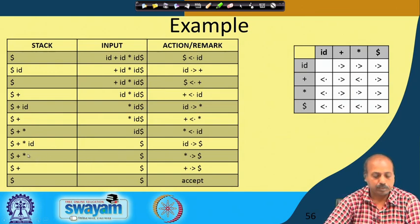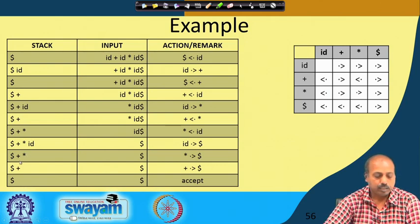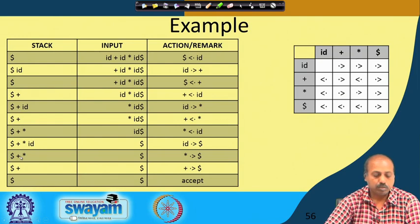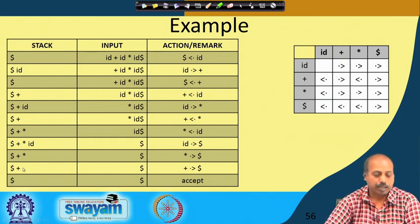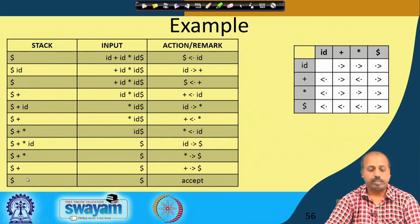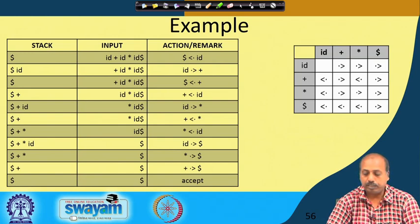Now we have star and dollar; star ⋗ dollar, so we pop star. Top of stack contains plus, and plus ⋖ star, so popping stops. Next, plus and dollar; plus ⋗ dollar, so we pop plus. Now top of stack contains dollar, and dollar ⋖ plus, so popping stops. At this point the top of the stack contains dollar and the input is also dollar, so it comes to an accept state and the whole parsing process ends.